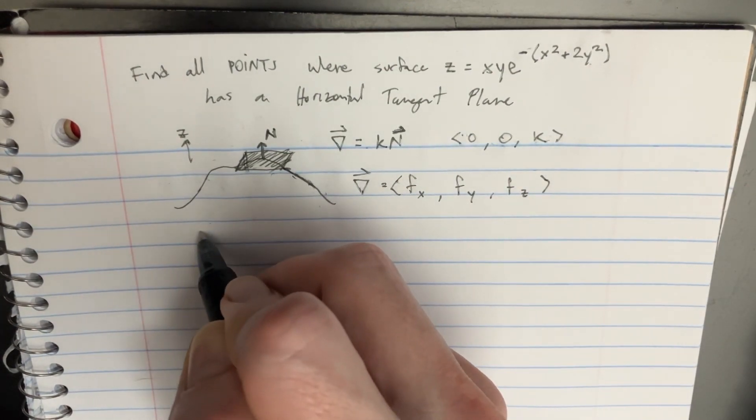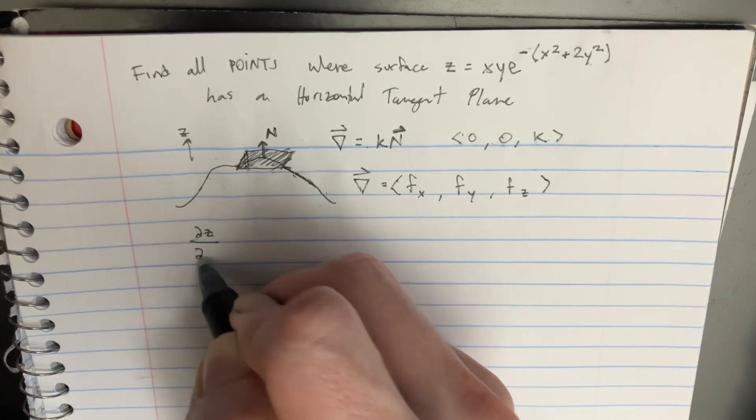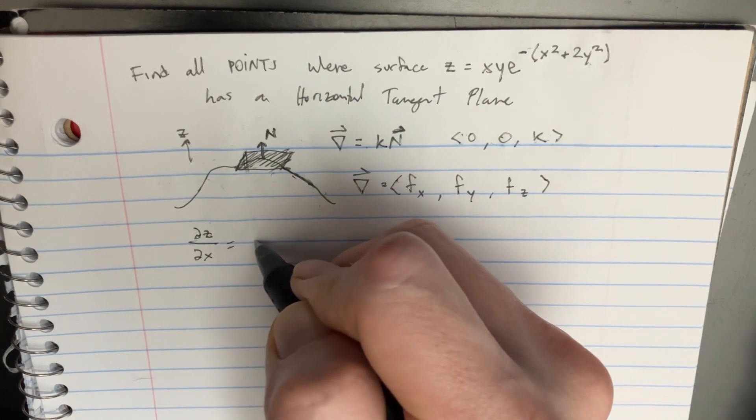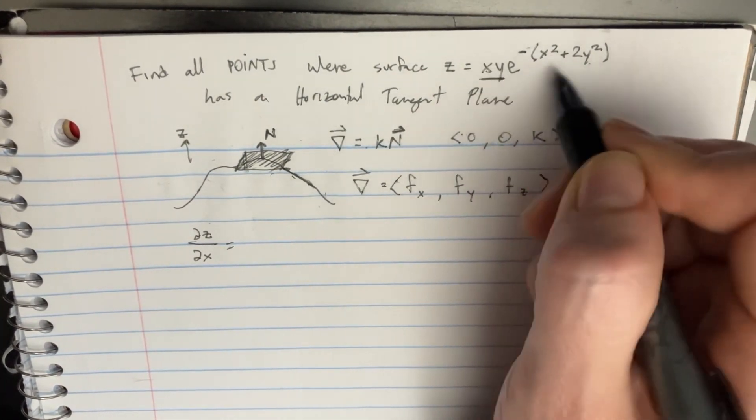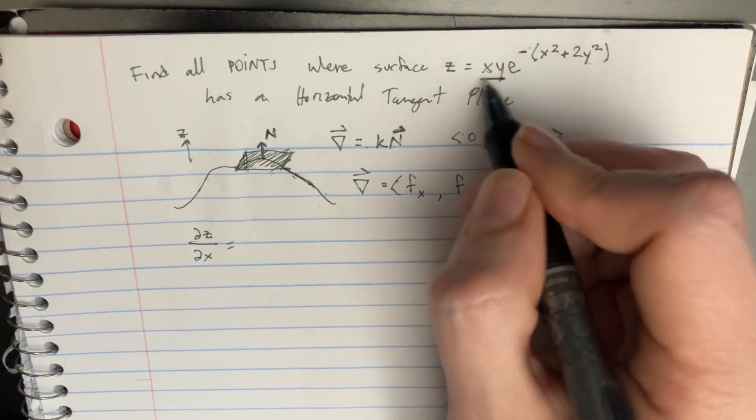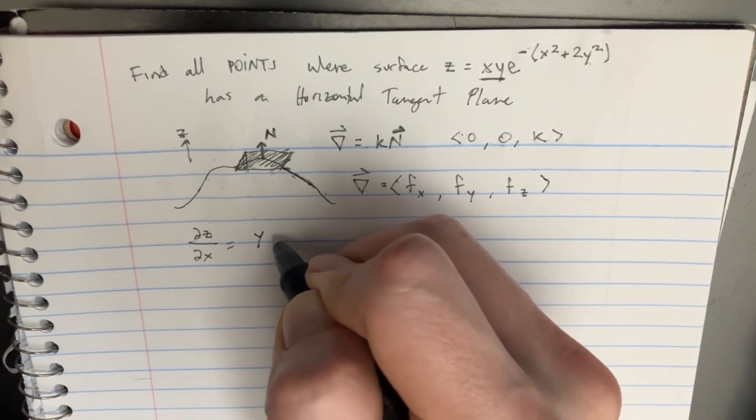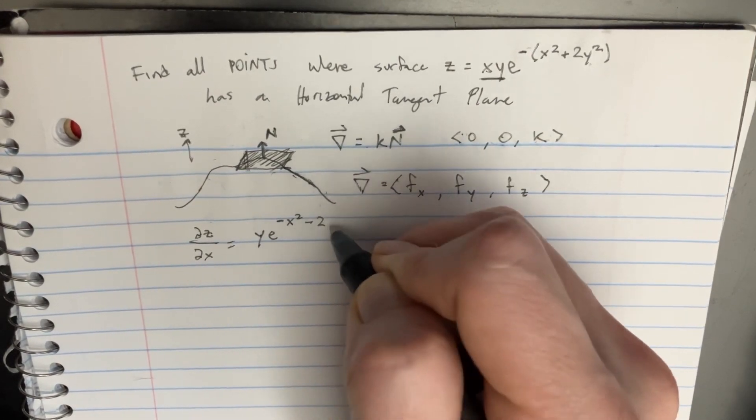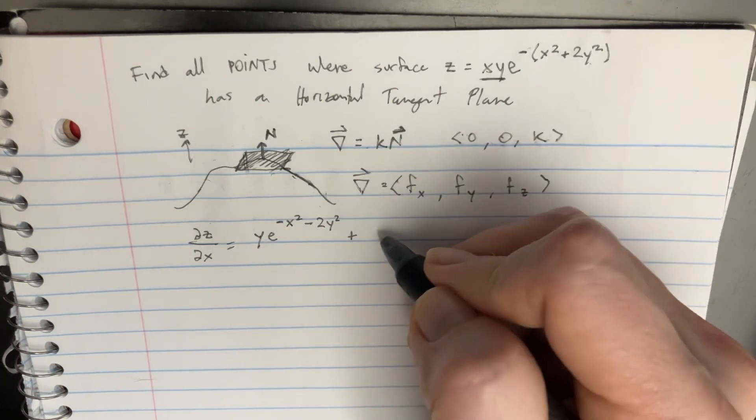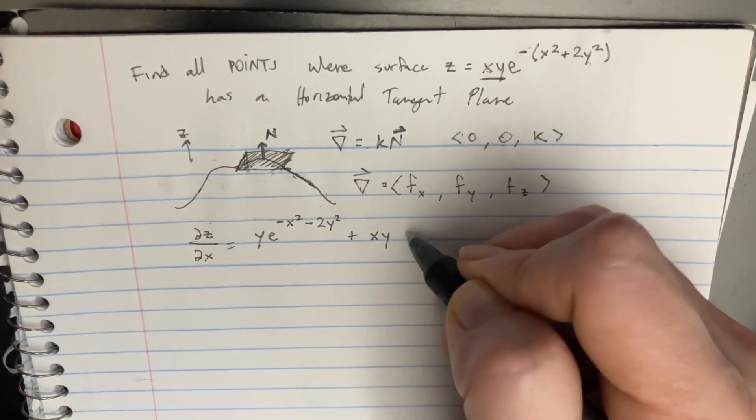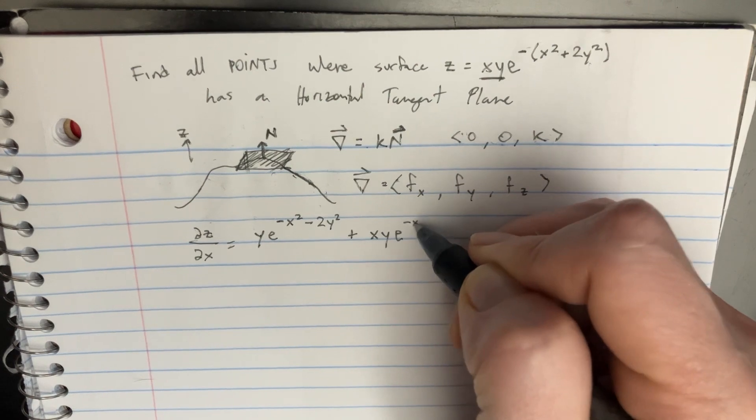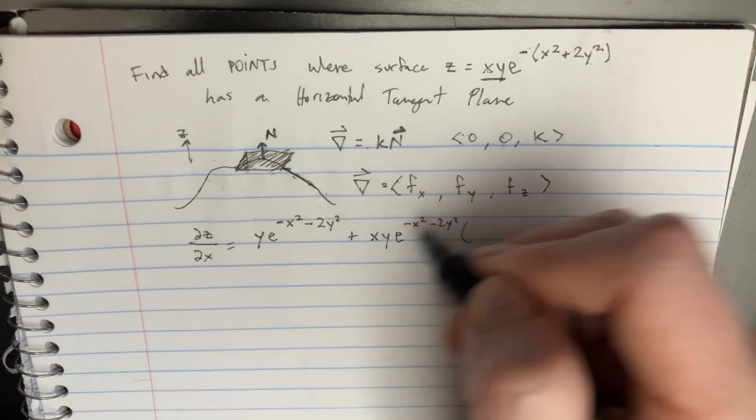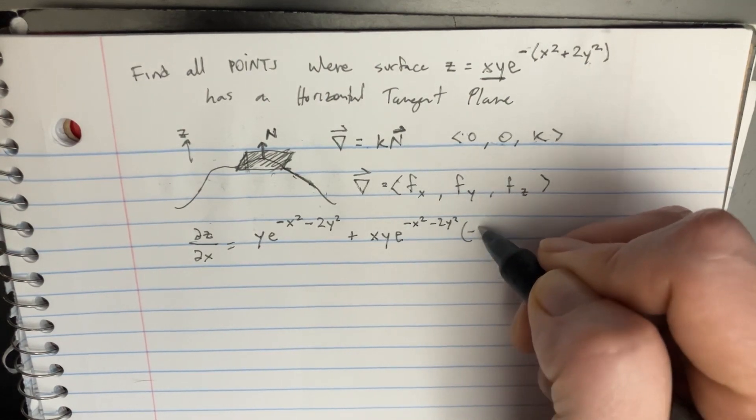So we'll say, you know, dz over dx. That's just going to be equal to this. We'll need to take the product rule of this. So we're going to differentiate that. We'll call it y. And then we'll leave the other one as this, minus 2y squared. Then we can add, we can leave this side that way. And we'll take the derivative of this side. So we have to multiply that by the derivative of the top here. With respect to x is going to be negative 2x.